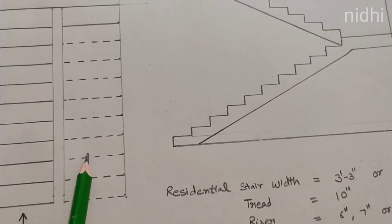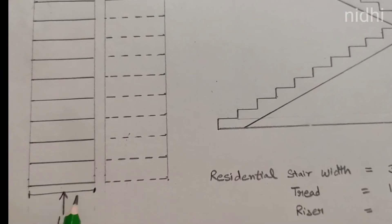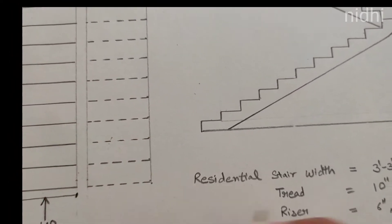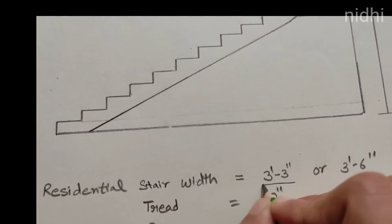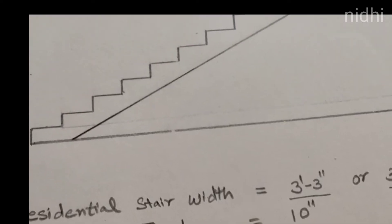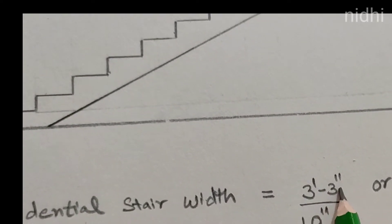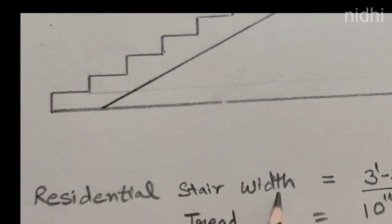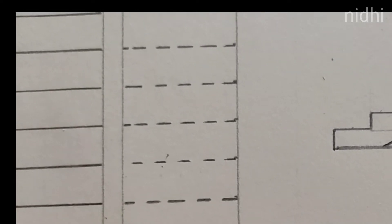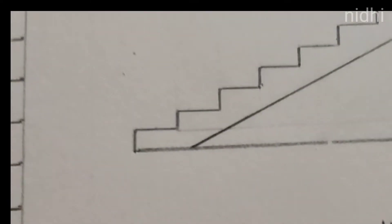Residential stair width — the standard size is 3 feet 3 inches or 3 feet 6 inches. In case we don't have space, only then you can use 3 feet, otherwise try to use 3 feet 3 inches or 3 feet 6 inches. In this case I am using 3 feet 6 inches.